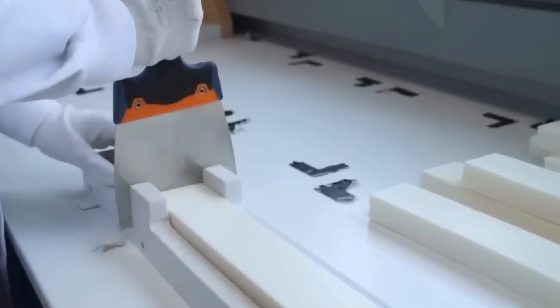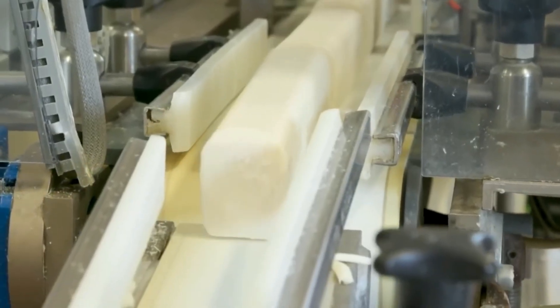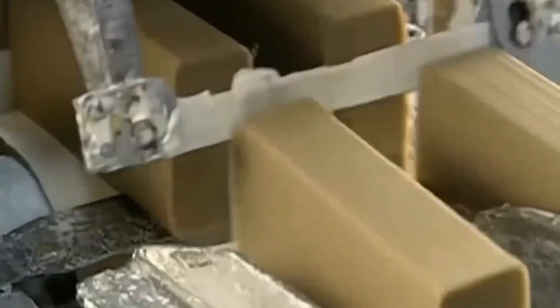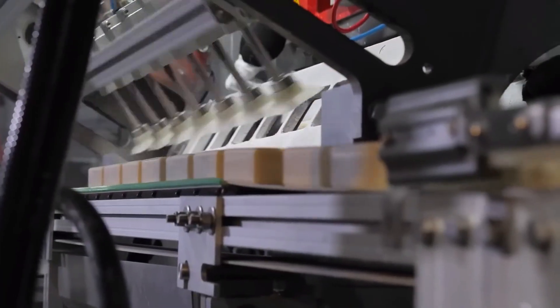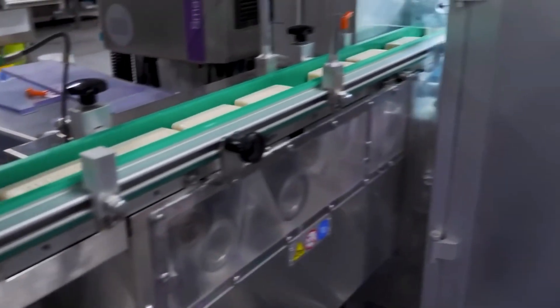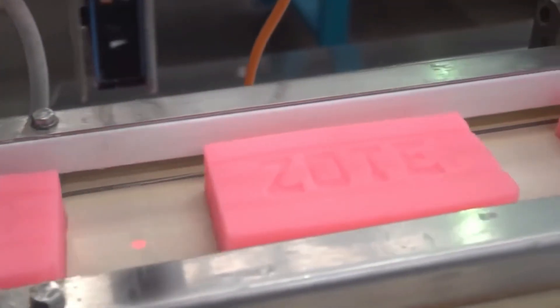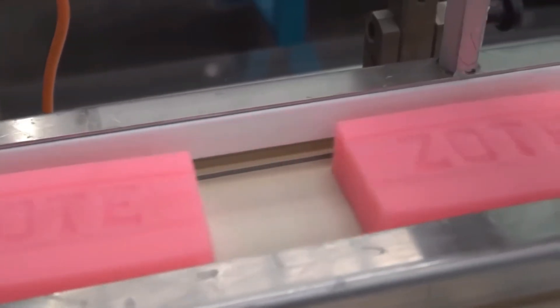Freshly cut bars are still soft and moist. They need time to cure. Drying rooms with carefully controlled temperature and humidity remove excess moisture and harden the soap. This process can take anywhere from a few days to several weeks, depending on the formula. The longer the drying time, the harder and longer lasting the soap becomes.